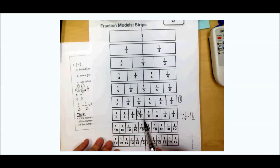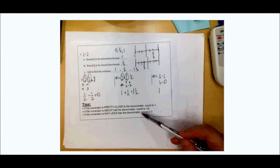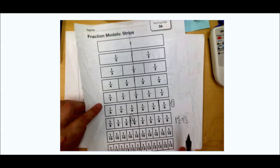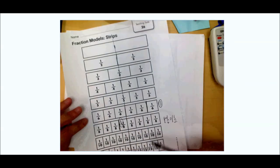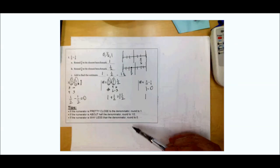You can use the fraction strips if you're really stuck, but I would prefer you use the rules of thumb and get to those eventually. You will not always have fraction strips with you, and the purpose of estimating is to get an approximate answer very quickly. Relying on fraction strips would defeat the purpose, but getting used to these rules of thumb will really help you do these quickly in your head.